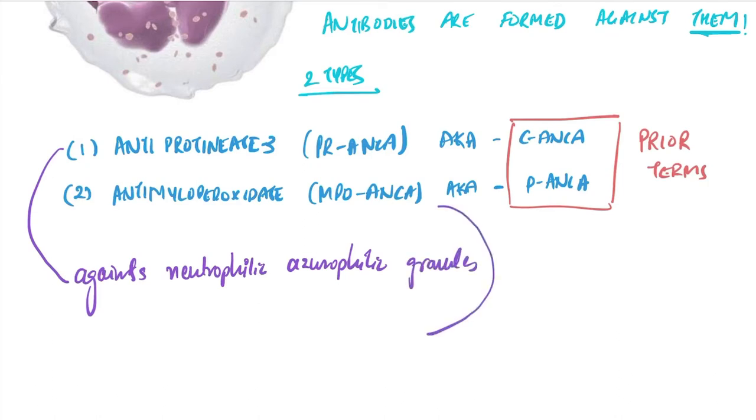C-ANCA is against neutrophilic azurophilic granules, and P-ANCA is against myeloperoxidase lysosomal granules. The mechanism: drugs or microbes lead to formation of ANCA, which leads to PR3-MPO expression on the surface of leukocytes.